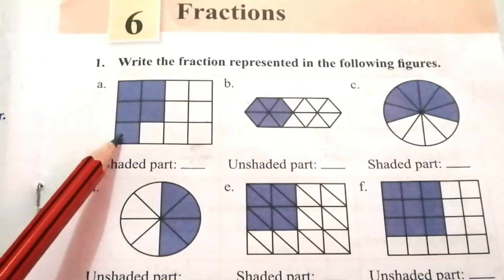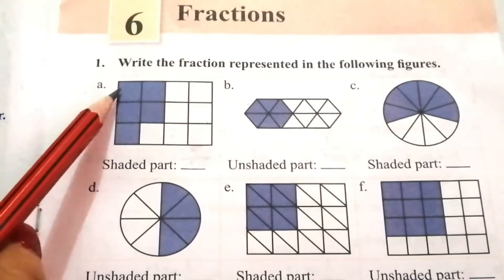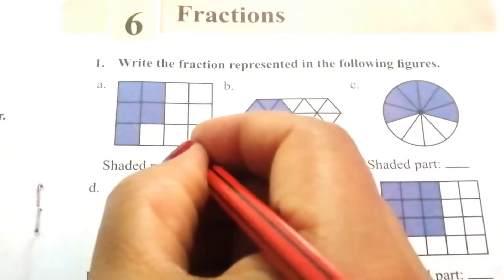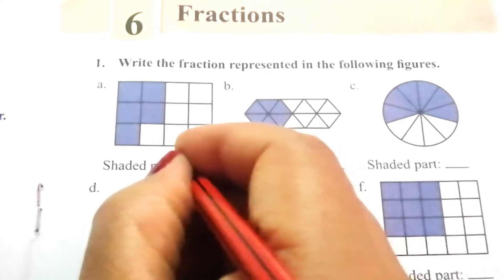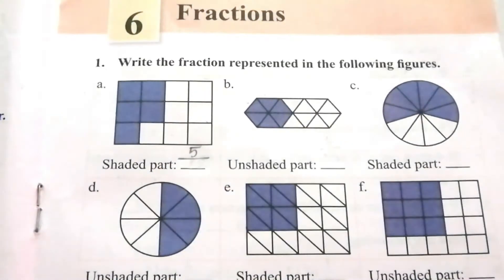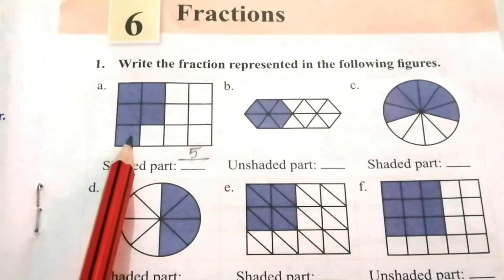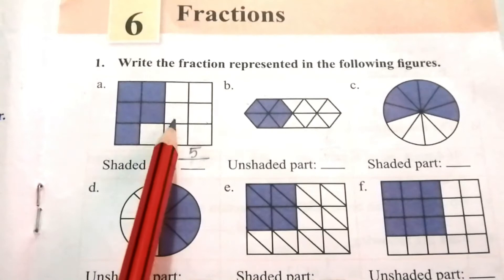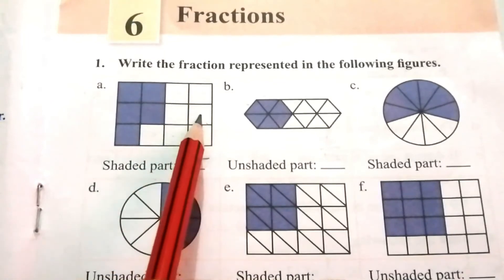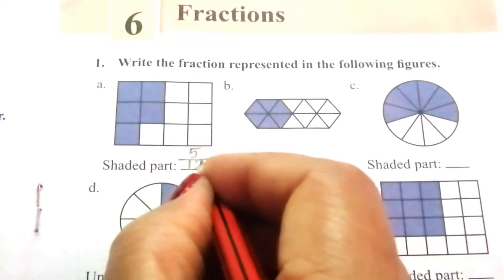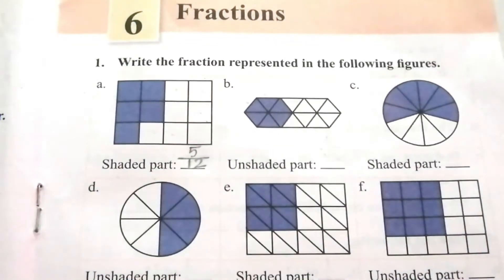First we have to count the shaded parts: 1, 2, 3, 4, 5. So 5 is the numerator. The denominator is the total number of parts, which is 12. So 5 by 12 is the fraction for the shaded part.